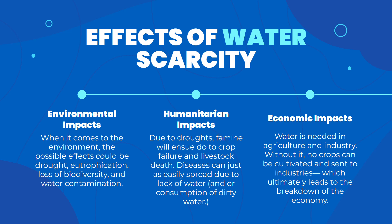Crops will fail and livestock will die. Many humanitarian impacts depend on environmental impacts — for example, famine caused by droughts. Disease can also spread more easily due to water contamination, and it won't be easily treated because there's no clean water, and people are likely to drink the contaminated water if there's nothing else. Economically, water is needed in agriculture and industry; without it, crops cannot be cultivated and industries fail, leading to economic breakdown, reduced government income, and inability to improve infrastructure.